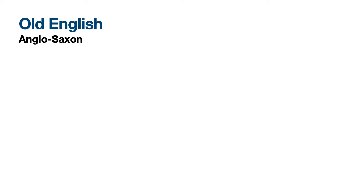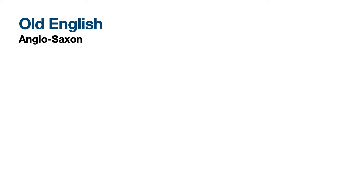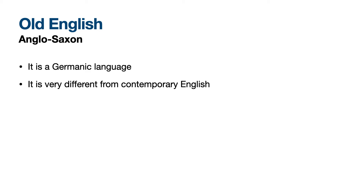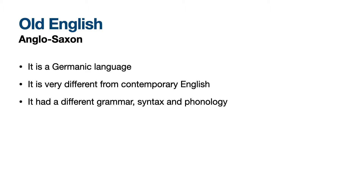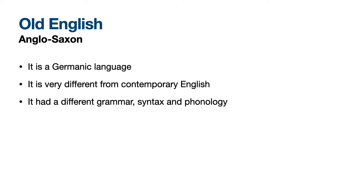So first of all let's talk about Old English. Old English is a Germanic language. It is very different from contemporary English, and we'll see in a bit how great this difference is. It's so different that it has a very different grammar, syntax, and phonology. Letters and words are pronounced very differently in Old English than in contemporary English. One of the best examples is that nouns are declined in cases, just like Latin or Greek — they have a nominative, an accusative, and so on.